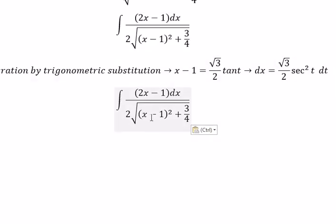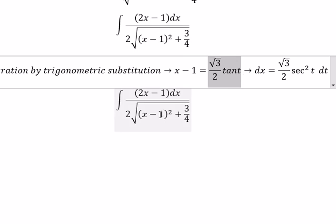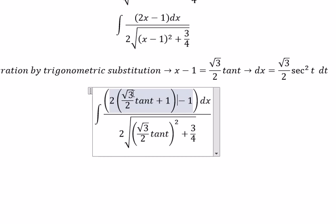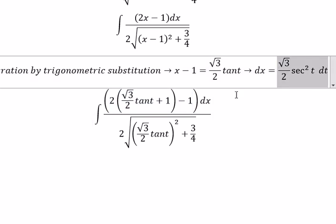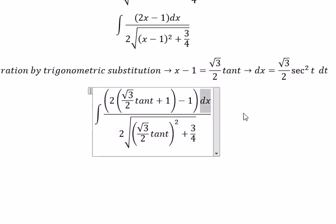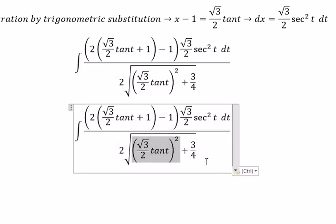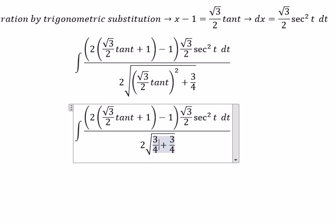ds equals the square root of three over two times secant squared of t dt. So s minus one, we change for this one. For s, we put negative one on the right and you will get the square root of three over two multiplied by tan t, plus one. About ds, we change for this one.